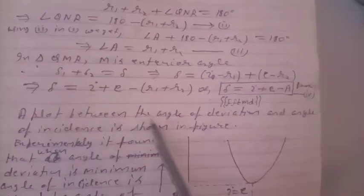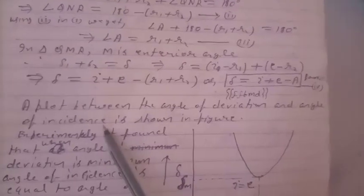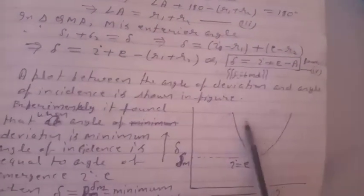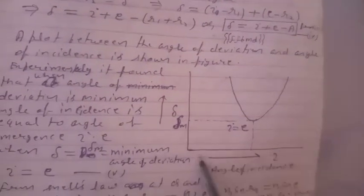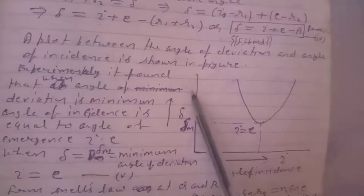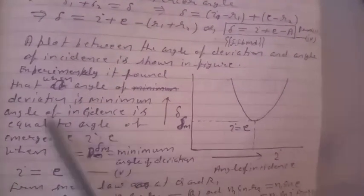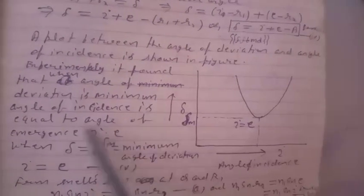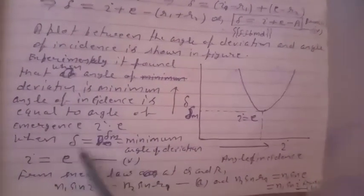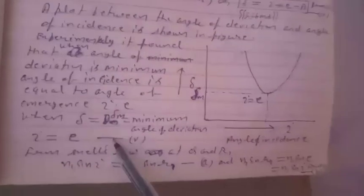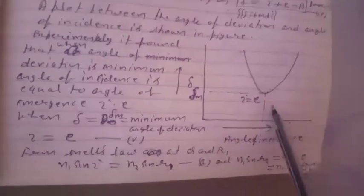If we draw a plot between the angle of deviation and the angle of incidence, we find that when the angle of deviation is minimum — that is when delta equals delta_M (the minimum angle of deviation) — the angle of incidence equals the angle of emergence, i.e., I equals E.